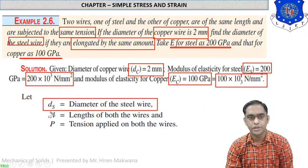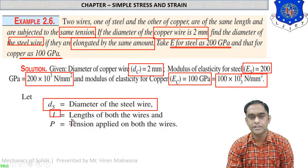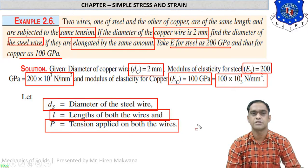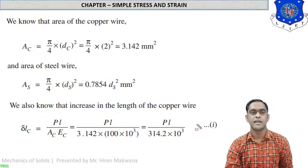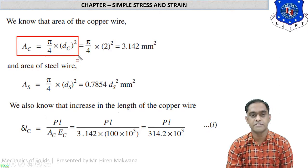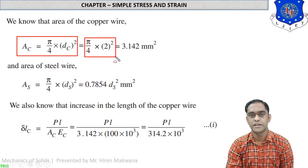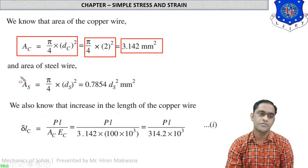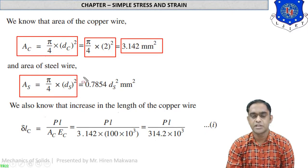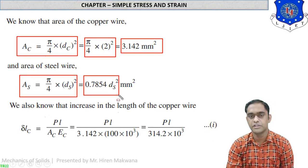The length L and tension P are the same for both wires. Area of the copper wire A_c = (π/4) × d_c² = (π/4) × 2² = 3.142 mm². Area of steel wire A_s = (π/4) × d_s², but d_s is not known, so it remains in terms of d_s in mm².